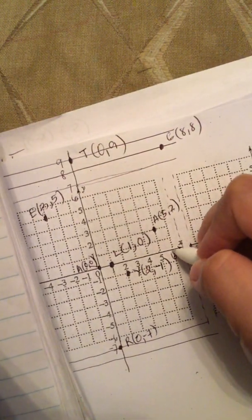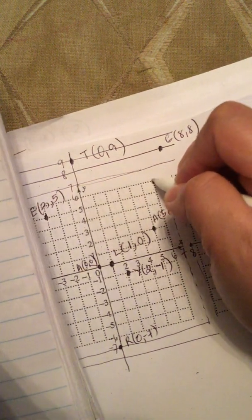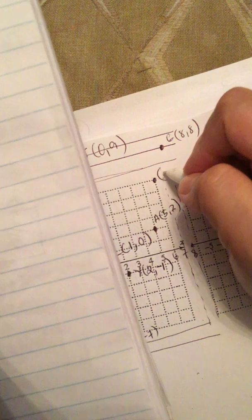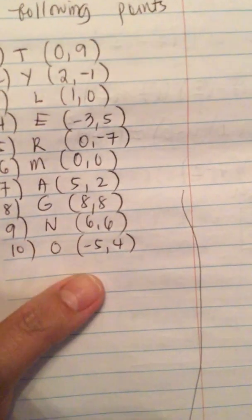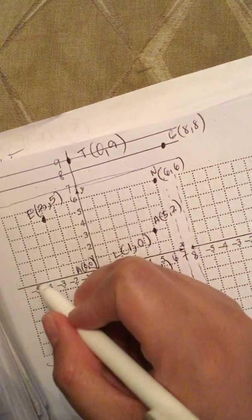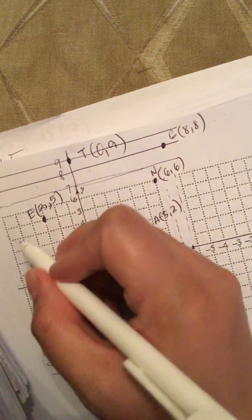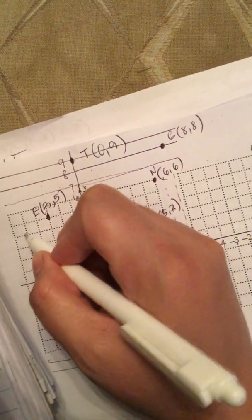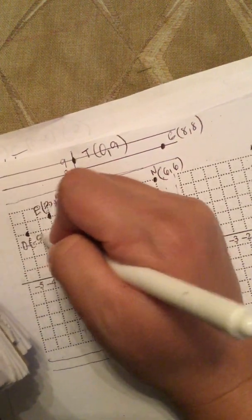Next one is six comma six. Here is six, now we go up to six — right here. So this is the point six comma six. And the last one is negative five comma four. Negative five is here, and then we go up four — so this one. So we've plotted them all.